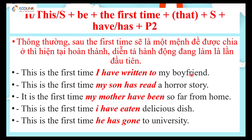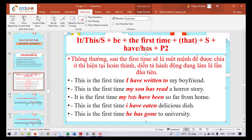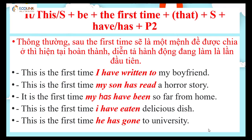Ví dụ ta có những câu như sau: 'This is the first time I have written to my boyfriend' — Đây là lần đầu tiên tôi viết thư cho bạn trai của tôi. Hoặc 'This is the first time my son has read a horror story' — Đây là lần đầu tiên mà con trai tôi đọc một câu chuyện kinh dị. Hay 'This is the first time my mother has been so far' — lần đầu tiên mà ai đó làm điều gì, dùng với hiện tại hoàn thành.